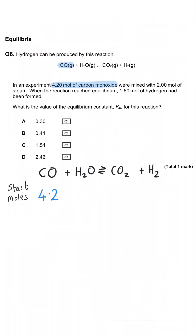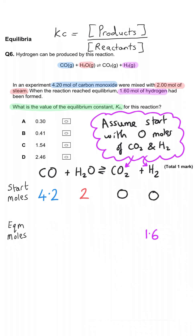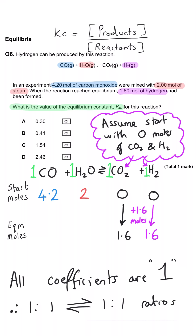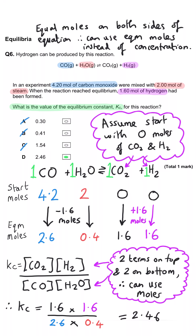In an experiment, 4.2 moles of carbon monoxide were mixed with two moles of steam. When the reaction reached equilibrium, 1.6 moles of hydrogen had been formed. What is the value of the equilibrium constant Kc? Assuming zero moles of products initially, at equilibrium we have 1.6 moles of hydrogen and 1.6 moles of carbon dioxide due to the 1:1 ratio. We used up 1.6 moles of each reactant, giving 2.6 moles of CO and 0.4 moles of steam. Since moles on both sides are equal, we use mole values directly: Kc = (1.6 × 1.6) / (0.4 × 2.6) = 2.46, which is D.